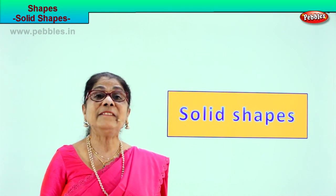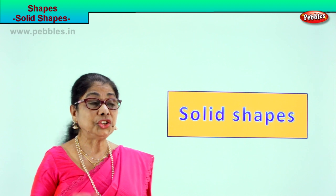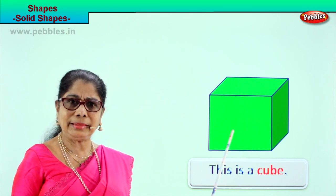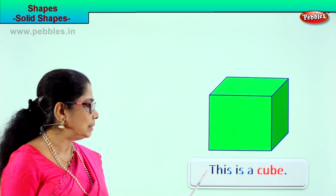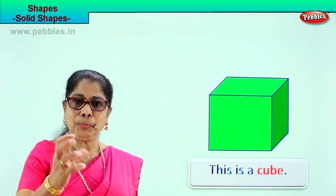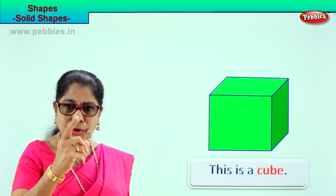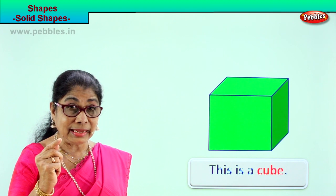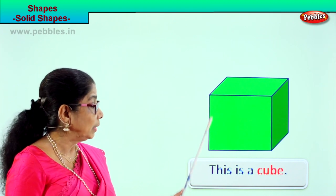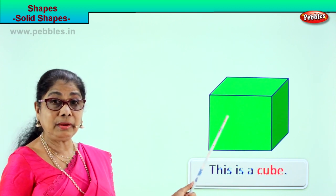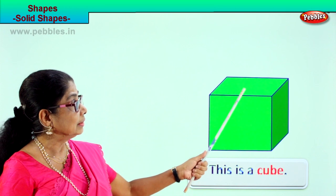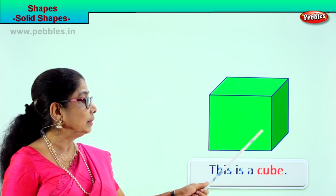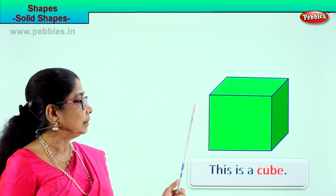Let's look at our first solid shape. See what we have here — you've seen cardboard boxes, they look like this. This is a cube. Have you played with the Rubik's cube? The cube is solid. Have you seen the tiny dice? It's solid. It has square faces and many sides: one, two, three, four, five, six — six sides.